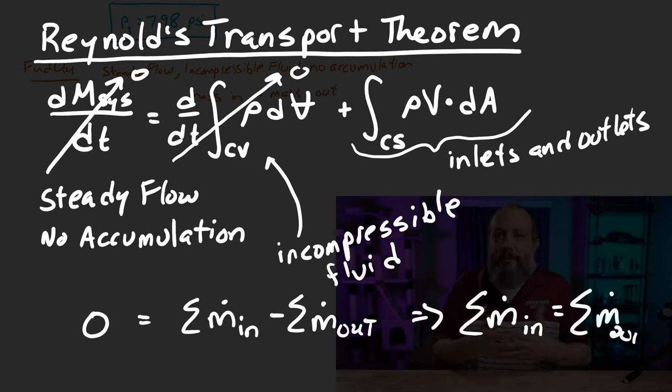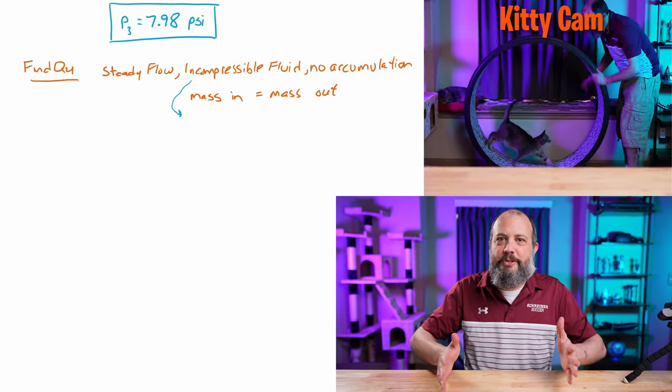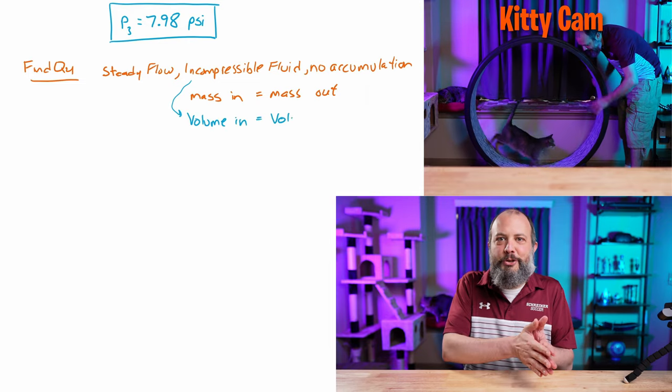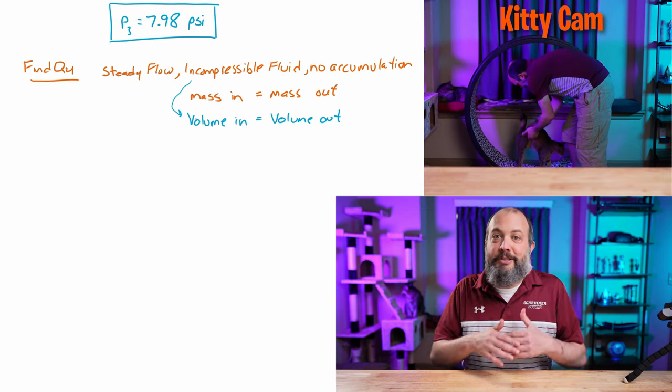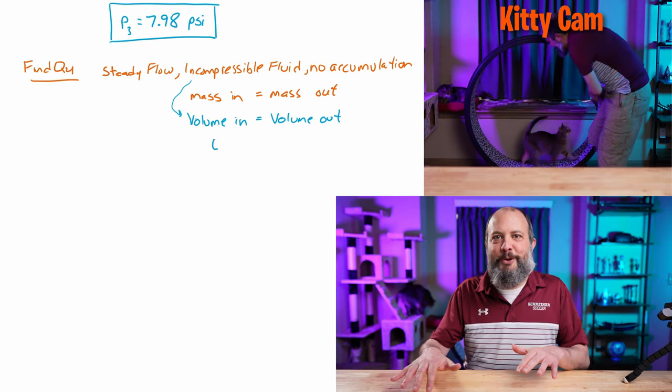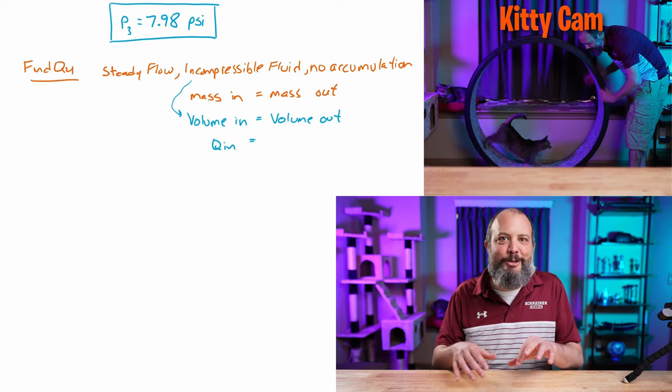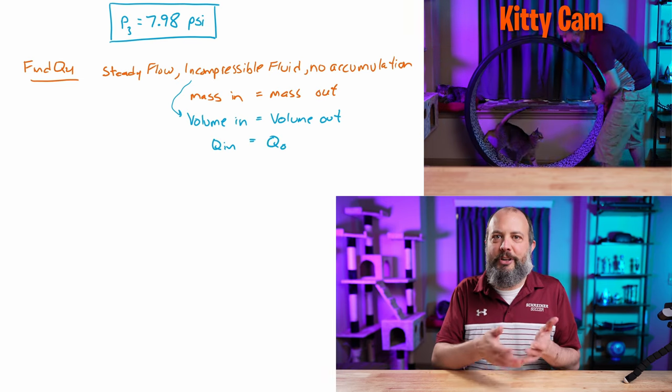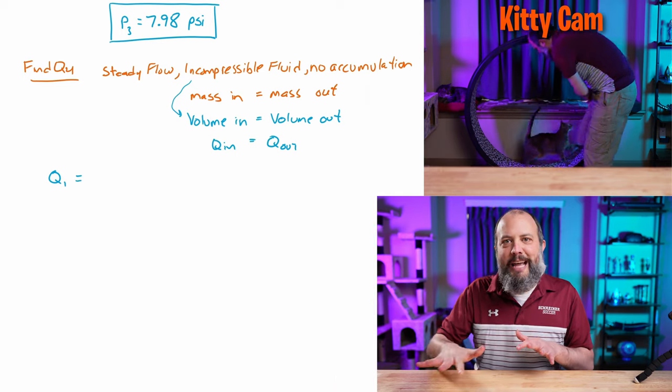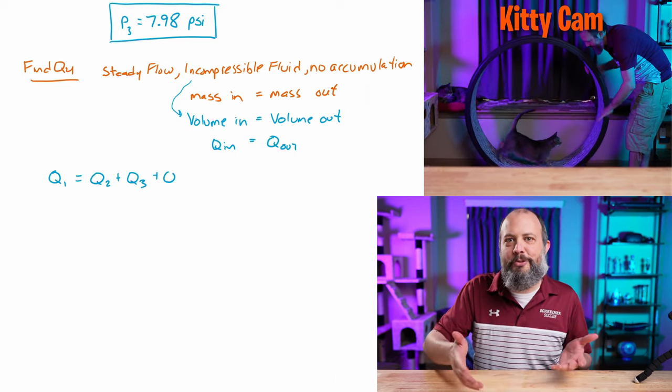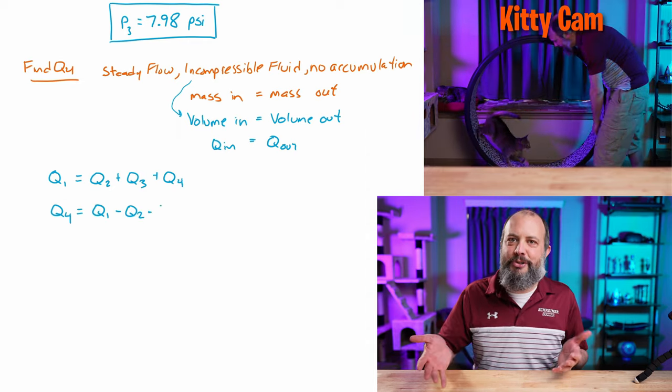Mass in equals mass out. That is, conservation of mass or the continuity equation. And if mass in equals mass out, if you divide both sides by density, you can get that volume in equals volume out since density is not changing. Take the derivative of both sides. Then the rate of change of volume in equals the rate of change of volume out. That's q in equals q out. Since we've got one inlet and three outlets, we've got q1 equals q2 plus q3 plus q4.